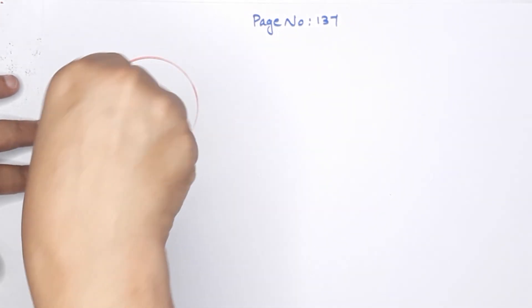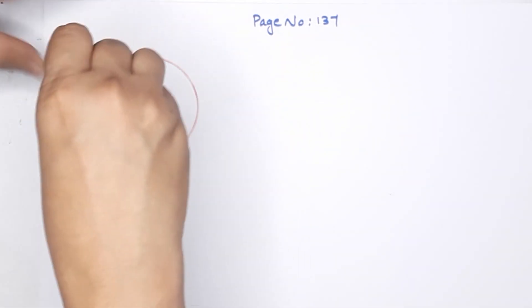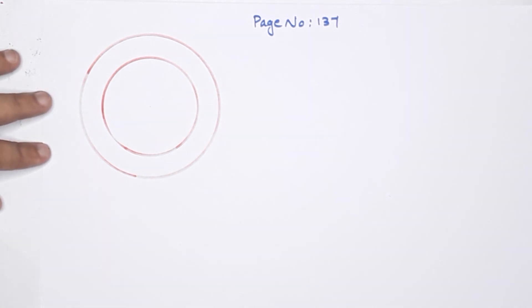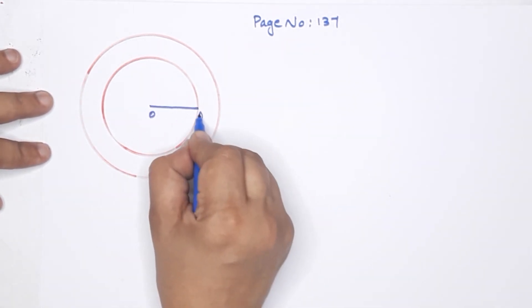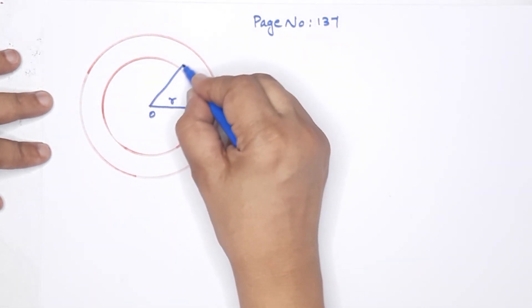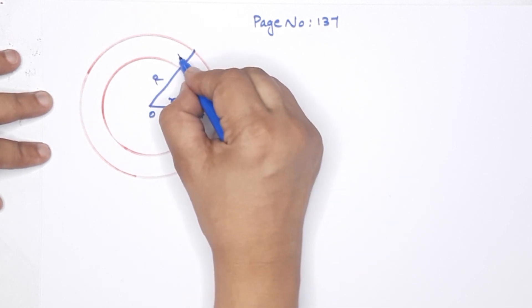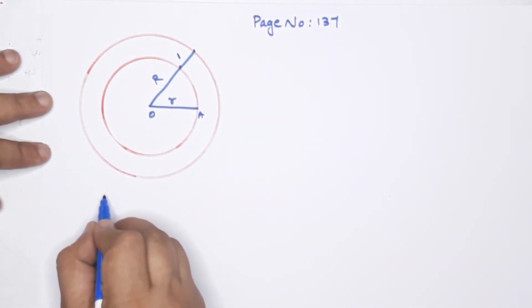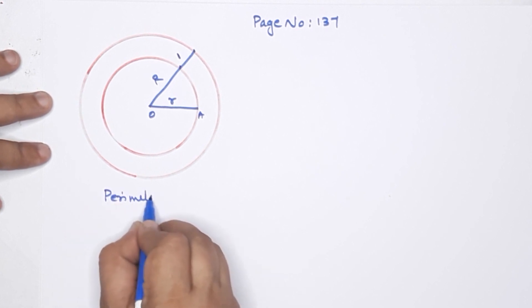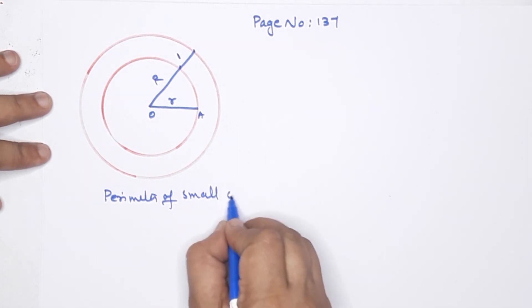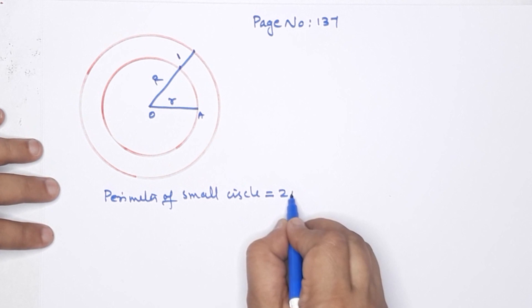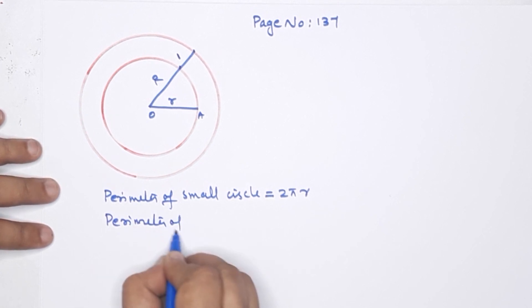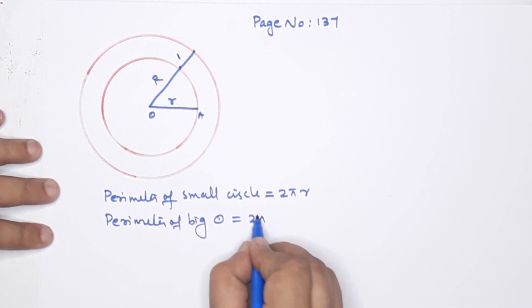What is the difference between these two circles? What is the difference between these two perimeters? This is the perimeter of the big circle, that is equal to 2π capital R.